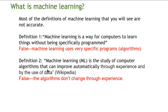What is machine learning? Many of the definitions of machine learning that you will see online are not accurate. Definition one: this is a common definition — machine learning is a way for computers to learn things without being specifically programmed. This is not true. Machine learning uses very specific programs, which are called algorithms.